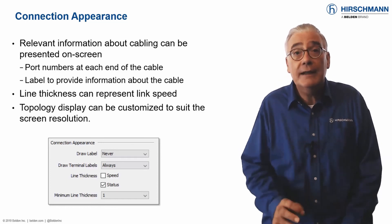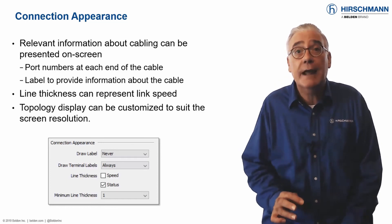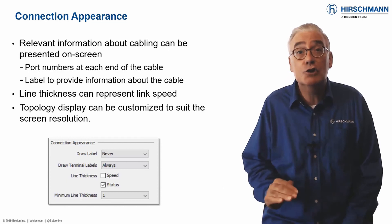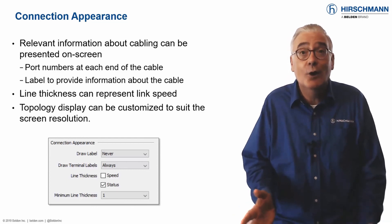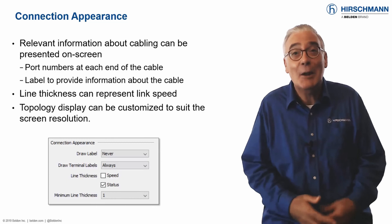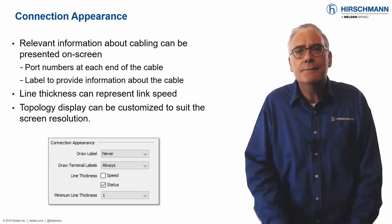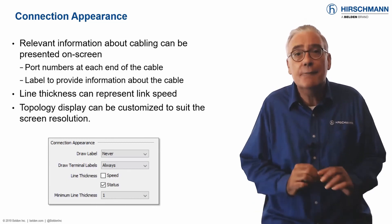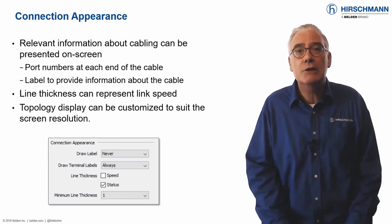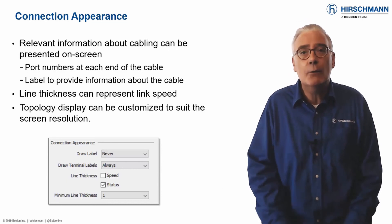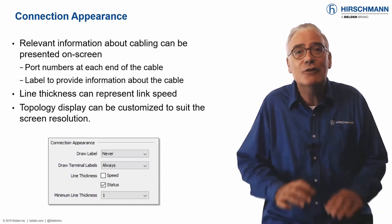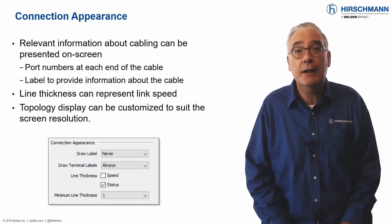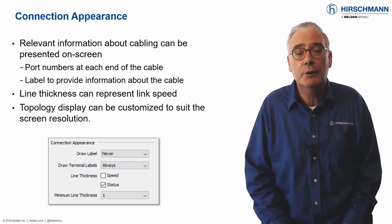The thickness of the cable lines can be configured to show link speed, or link status, or indeed both. For best effect, select a full information display when creating your network documentation, and a reduced information display for live operation.